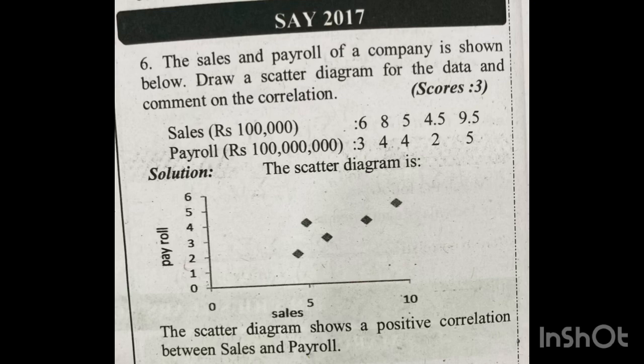If you look at the rising trend, we see that there is a positive correlation here. The scatter diagram shows a positive correlation between sales and payroll — they move in the same direction. So we conclude there is a positive correlation between sales and payroll.